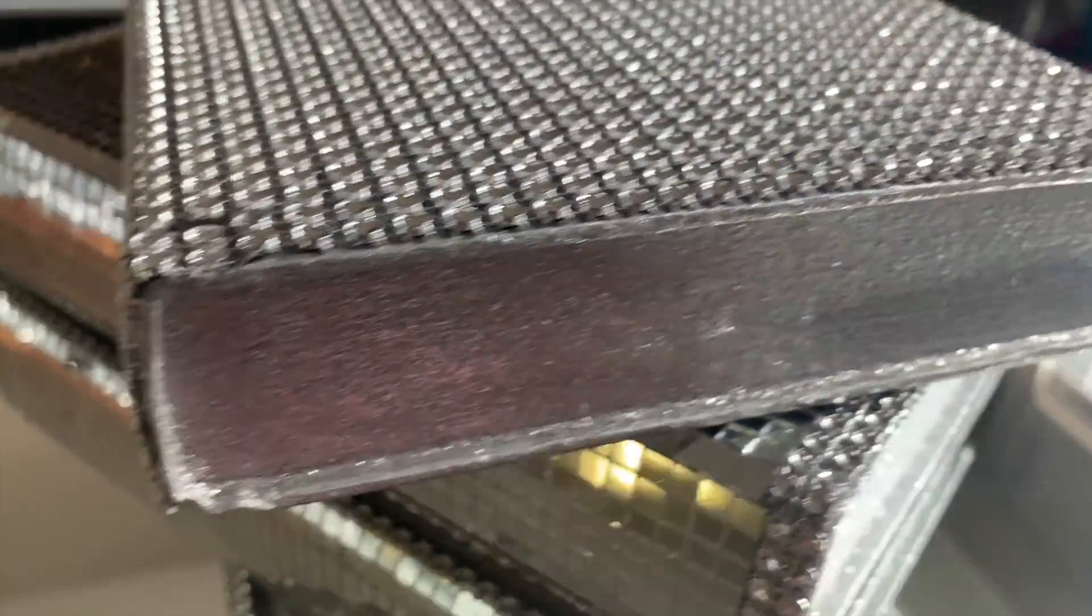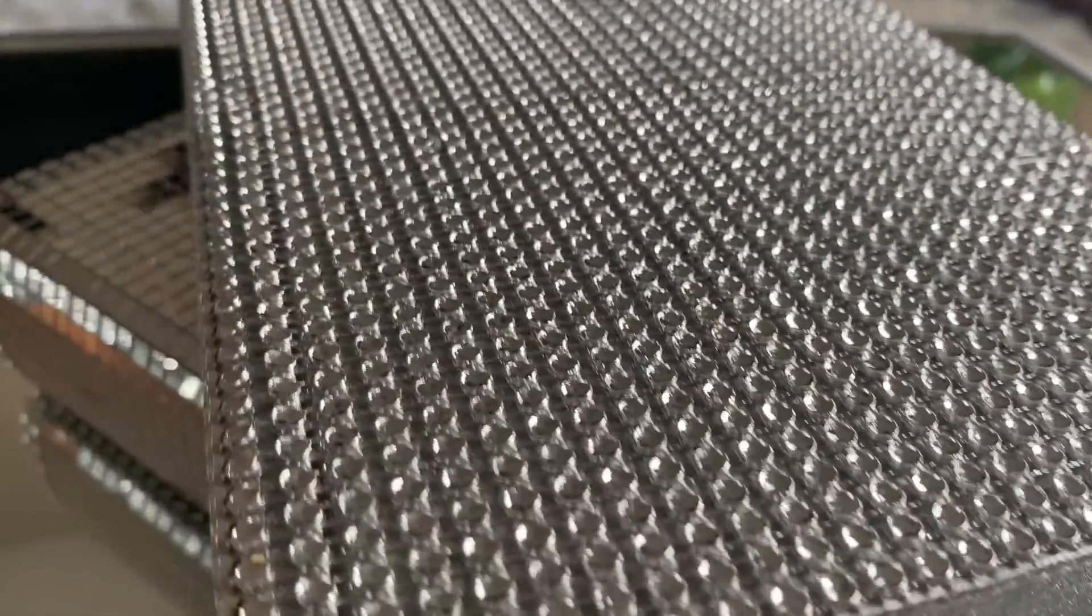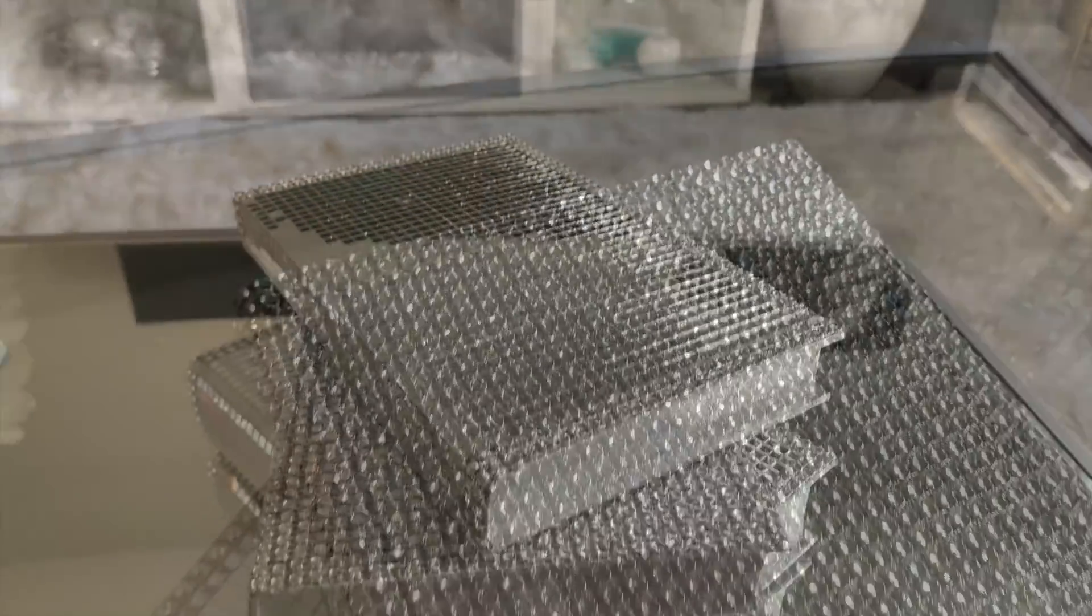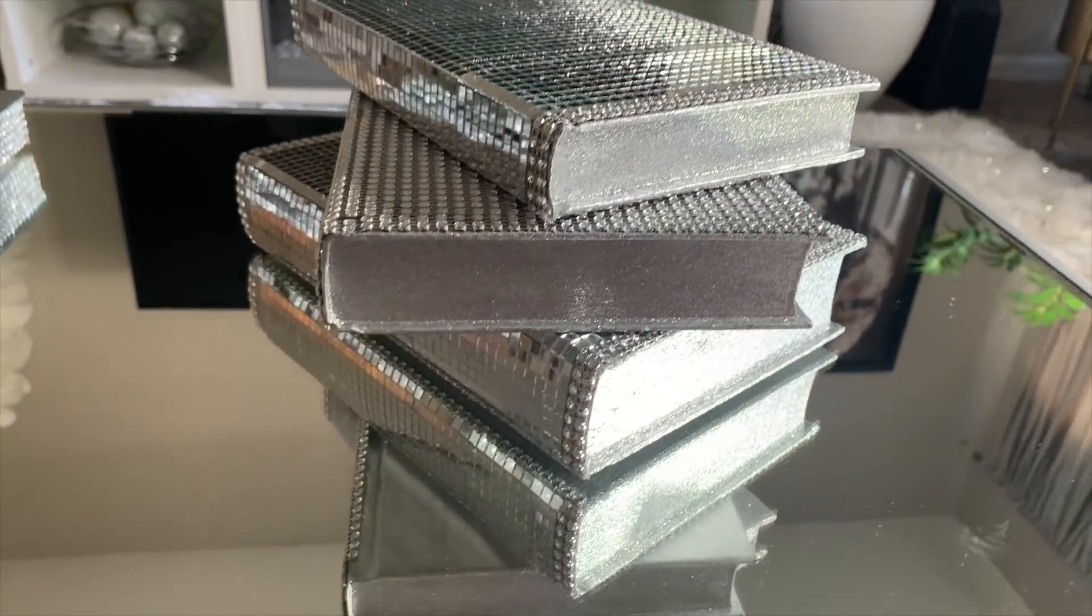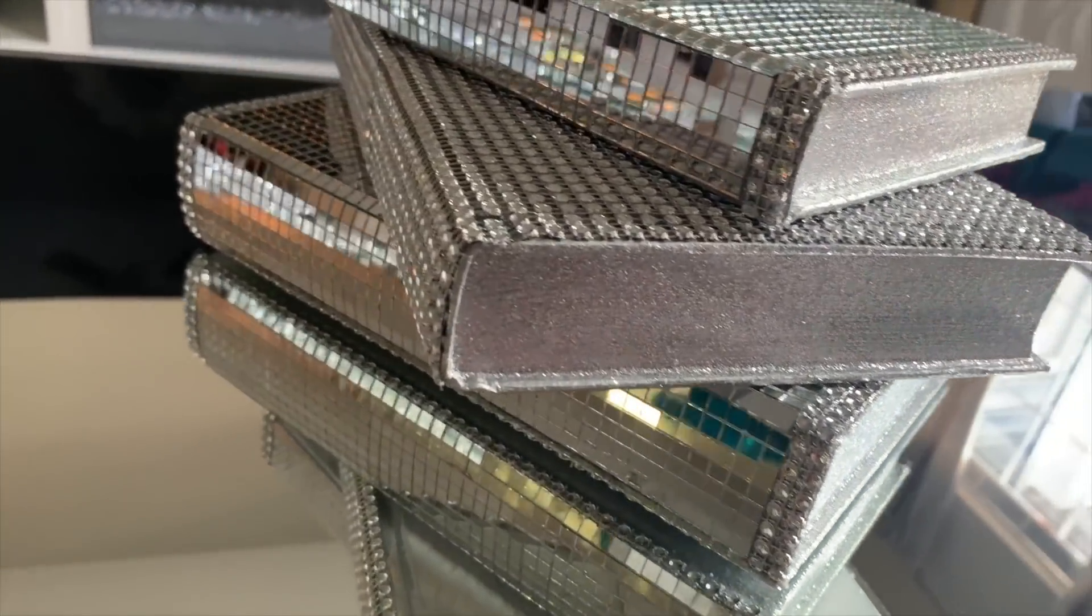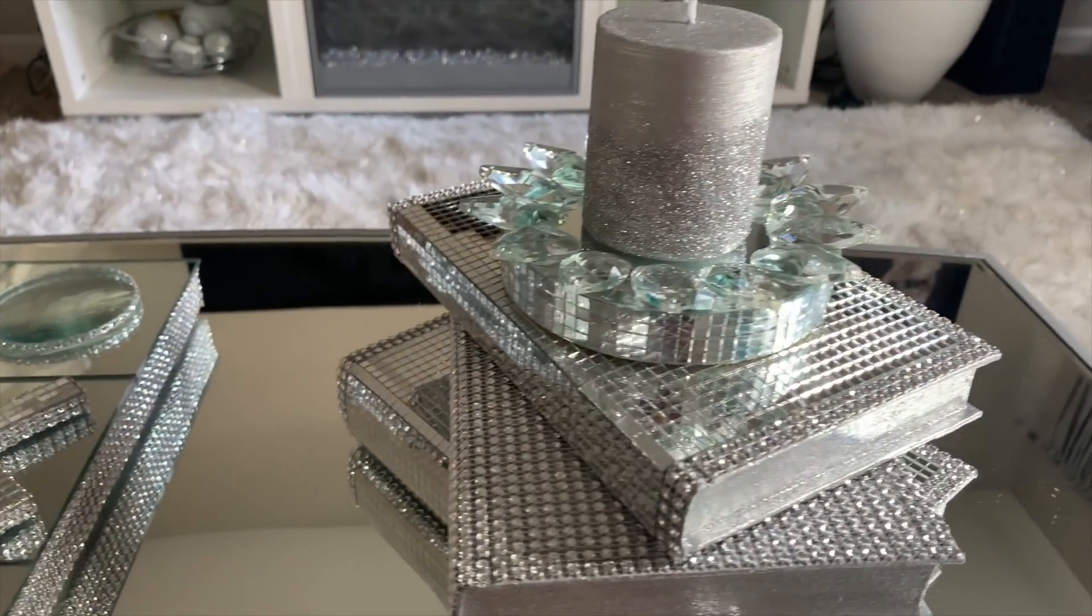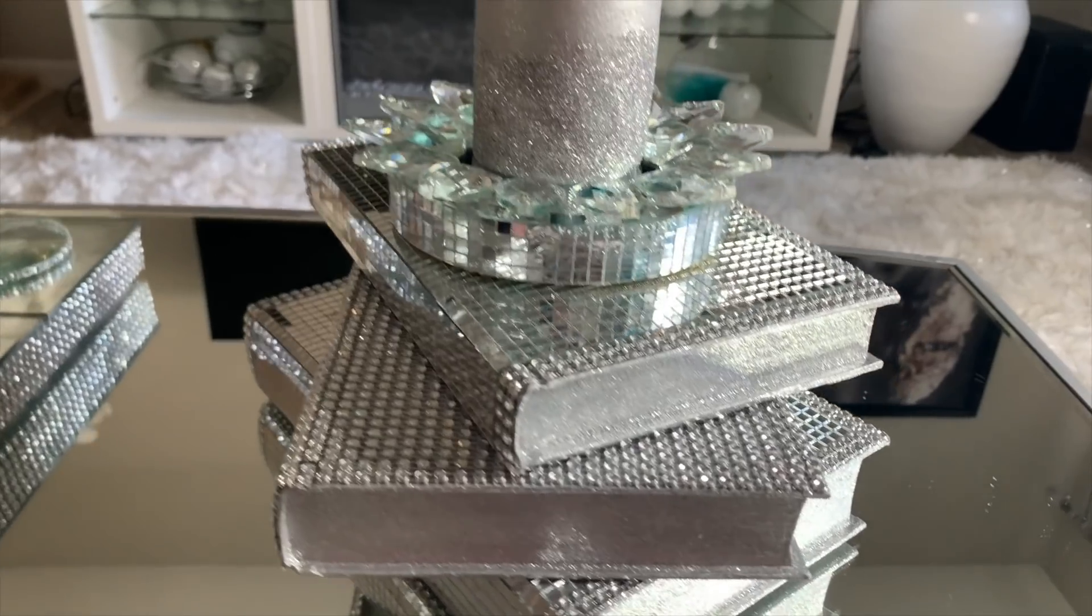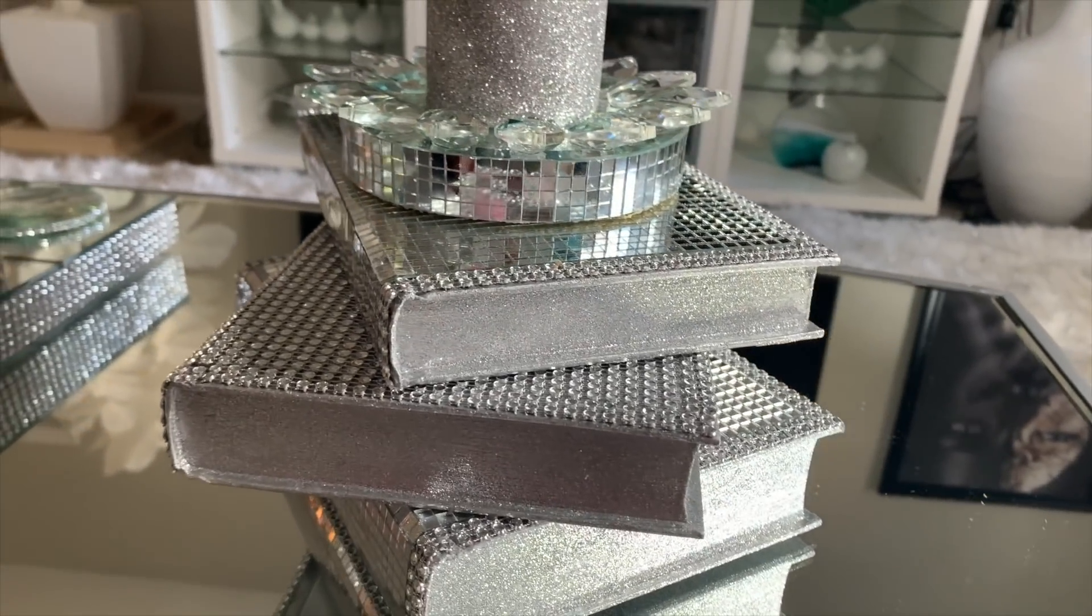Here's the book that I covered in diamond wrap, also known as bling, and this one will always sit in the middle. And here's the third book that I decorated on camera and it completes the set. And I topped it off with this beautiful candle holder that I DIY'd as well, and I'll link it below in the description box.